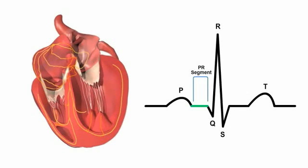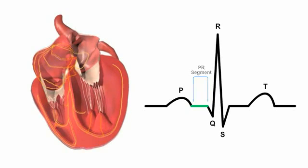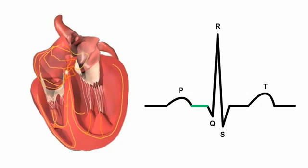When the signal leaves the atria, it enters the ventricles via the atrioventricular, or AV, node, located in the interatrial septum.